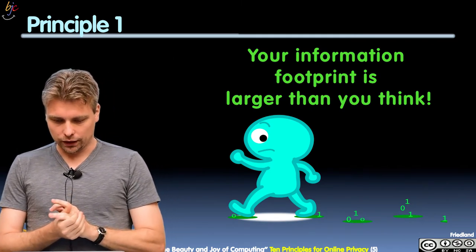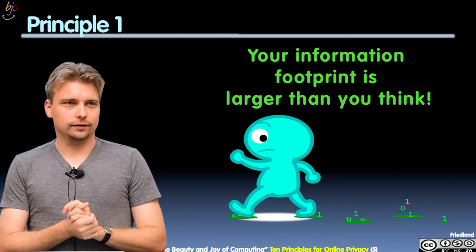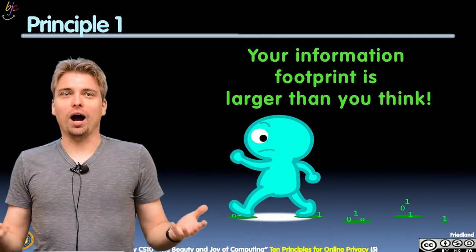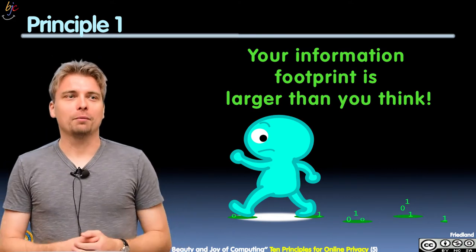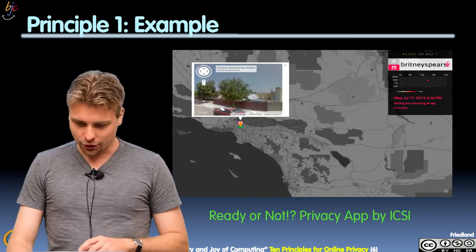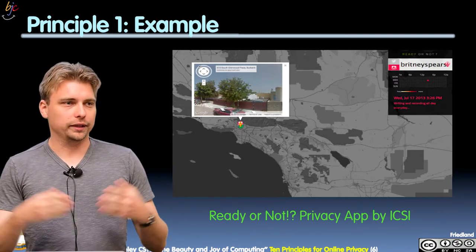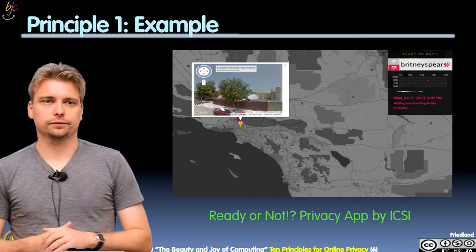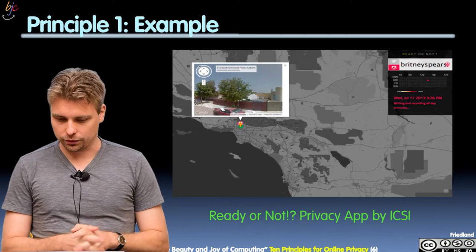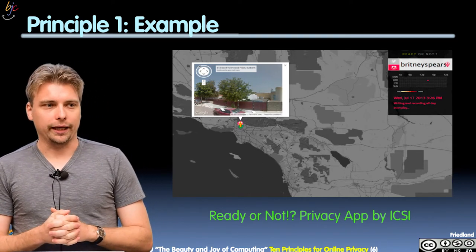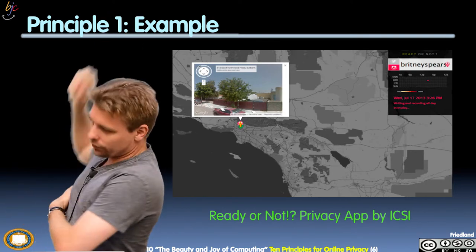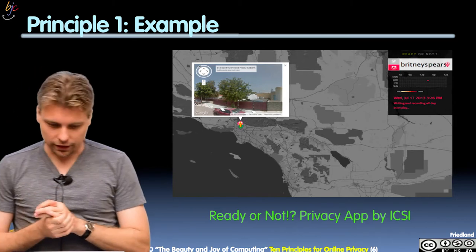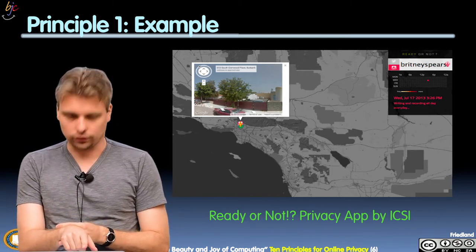So, the first principle is: your information footprint is larger than you think. It's a little judgmental — 'larger than you think' — but honestly, usually after looking at the website, they all agree. One example: we have interactive applications, and one of them is called Ready or Not. Ready or Not goes through Twitter handles that you give it — for example, Britney Spears. You see a regular tweet: 'writing and recording all day, every day.' But she was actually giving her geolocation of that recording studio she's at all day, every day, right now.